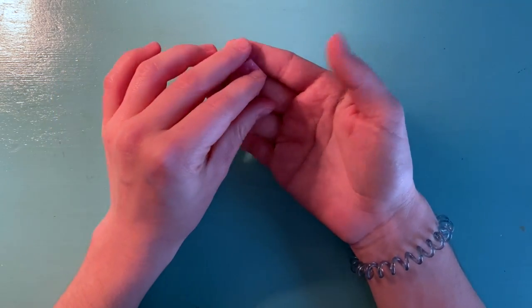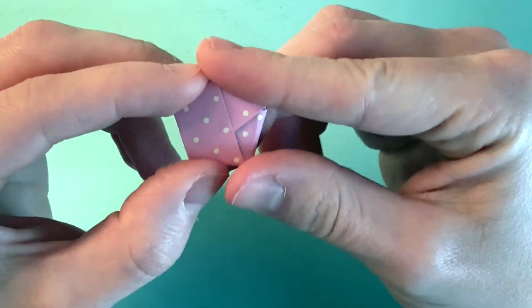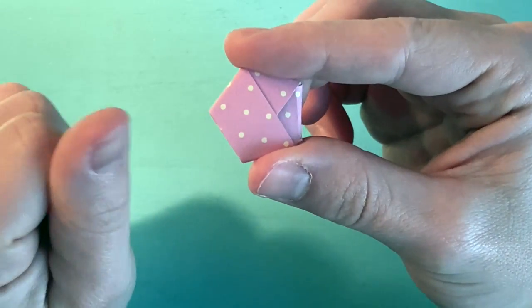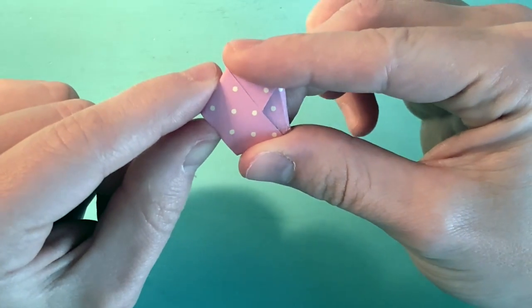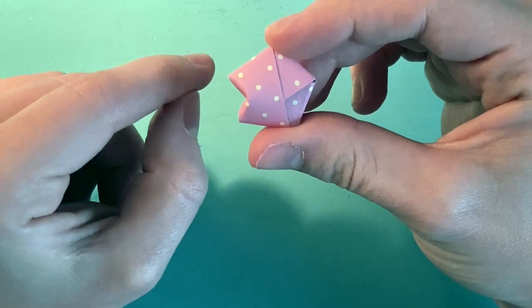Now you should have a pentagon. Now you're going to take your pentagon and holding it firmly, take your thumbnail and in between two points, push down very gently. You're going to do that all the way around.